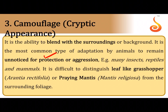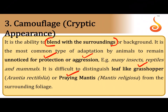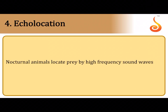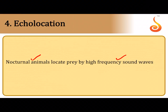Echolocation is an adaptation in nocturnal animals with poor eyesight — they produce high-frequency sound waves or ultrasound that hit an obstacle and reflect back, allowing the organism to identify the approximate distance of that obstacle. This is referred to as echolocation. Diapause is a suspension or dormancy in zooplankton development and larvae of some insects when surrounding environmental conditions become unfavourable.